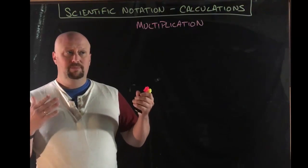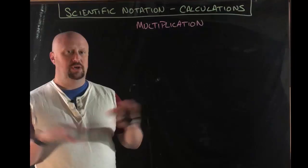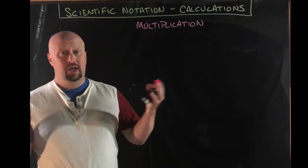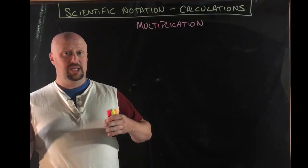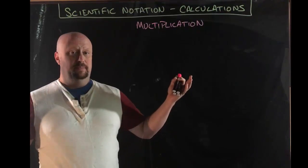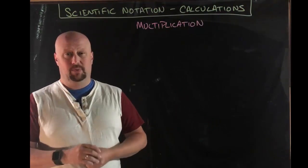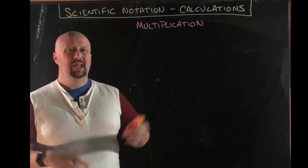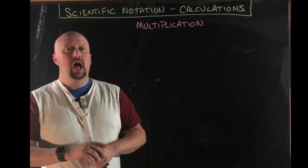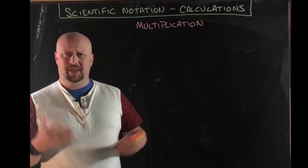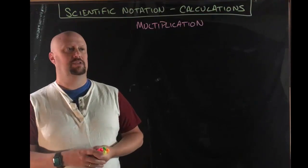We're going to start with multiplication and division. Those are the two easy things. Conveniently, they're also the two things that it's about 95% of what we do. Then we'll do a quick addition and subtraction one, and then I'll really briefly show you what you do if the answer doesn't come out strictly in scientific notation.